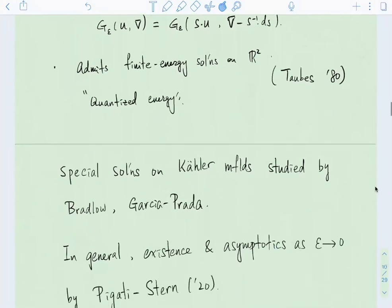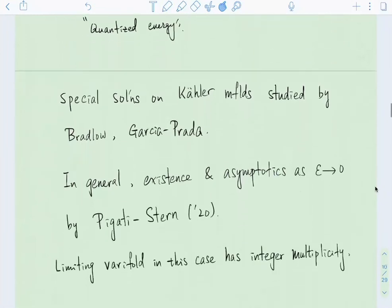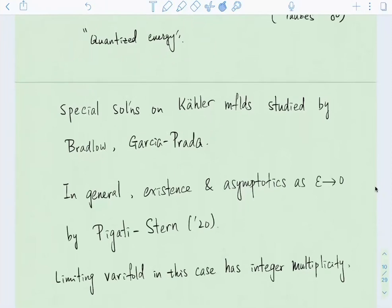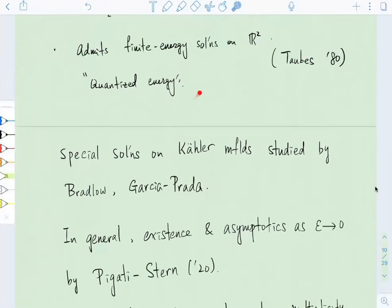On a general closed Riemannian manifold, the existence of solutions and the asymptotics as epsilon goes to zero for a sequence of solutions with uniform energy bound was done by Pigotti and Stern very recently. So they show that similar to theorem B above, in the limit, you get a stationary rectifiable varifold. But additionally, in this case, they can show that the varifold has integer multiplicity. And that's closely related to this quantization property I mentioned above for finite energy solutions on R2.